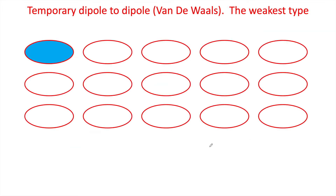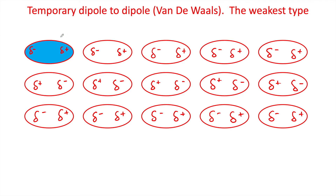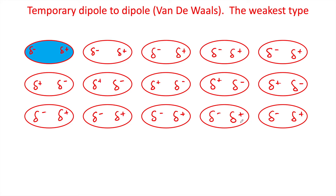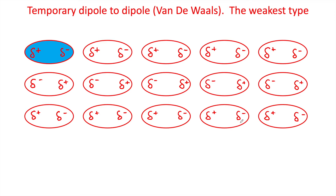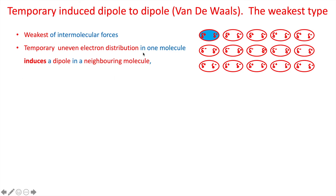Why is it temporary? Suppose electrons happen to be on one side of a molecule, creating a temporary dipole. That induces a rippling effect on all surrounding molecules. If this dipole swaps the other way a moment later, it has a rippling effect in the other direction - it might switch back and forth. Whatever direction it switches to, these are going to attract each other. So temporary induced dipoles are the weakest intermolecular forces: temporary uneven electron distribution in one molecule induces a dipole in neighboring molecules.